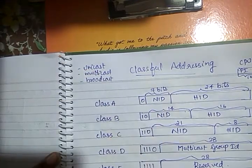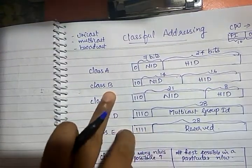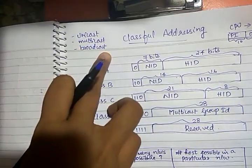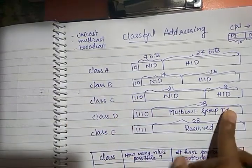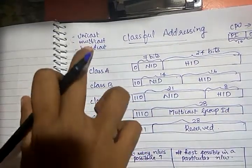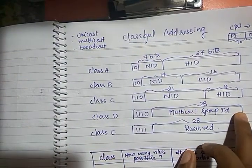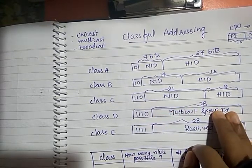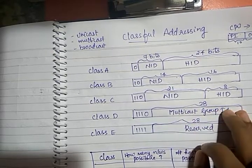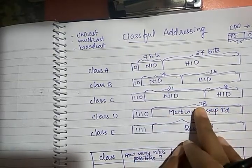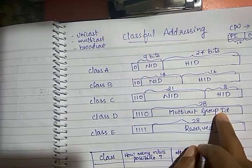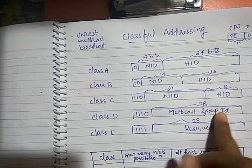Class A, B, and C addresses are used mainly for unicasting, and some special addresses within them are used for broadcasting. Class D is dedicated for multicasting. For multicasting, we have different multicast groups — the machines participating in a particular multicast group are given a common group ID. The 28 bits are utilized for that ID, so using 28 bits, 2 to the power 28 different multicast groups are possible. Some are temporary and some are permanent.